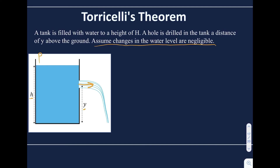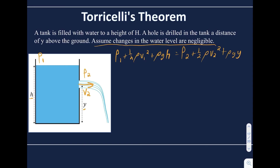At point 1, there's pressure at the top surface. Point 2 is where the water leaves, with pressure P2 and speed v2. Applying Bernoulli's law: P1 plus one half rho v1 squared plus rho g h equals P2 plus one half rho v2 squared plus rho g y. With the assumption that changes in water level are negligible, the speed at point 1 is zero, so we can cross that term out — there's no velocity at the top because the water level is not moving.